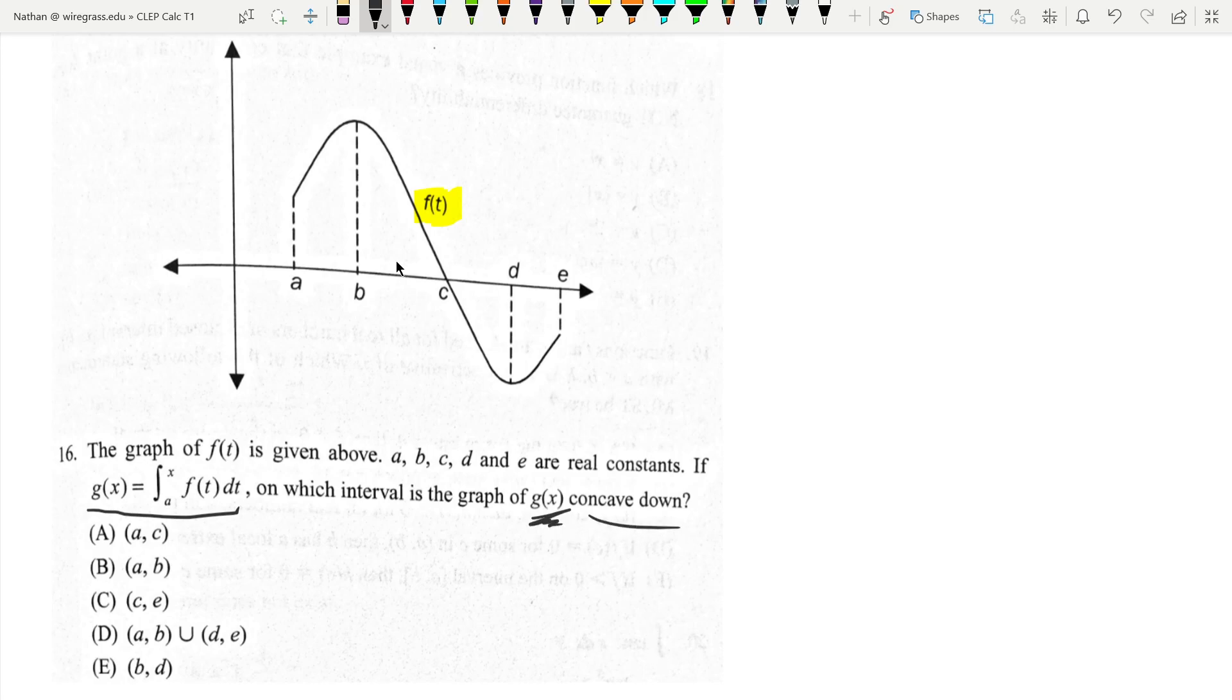So it's confusing because g of x is not pictured here. But because g of x is like the integral of f of t, you can kind of think of it as there's g of x, and then the derivative of this is kind of like g of x, is kind of like f of t.